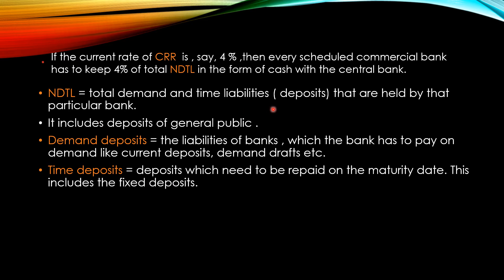When we talk about these liabilities, it means the deposits of the general public which people deposit in the commercial banks. Demand deposits are liabilities of the banks which the bank has to pay on demand — like current deposits and demand drafts. Time deposits are deposits which need to be repaid on the maturity date; people have to wait for that maturity date, and this includes fixed deposits. So when we calculate 4% to find the CRR, we take the total demand deposits as well as the time deposits.